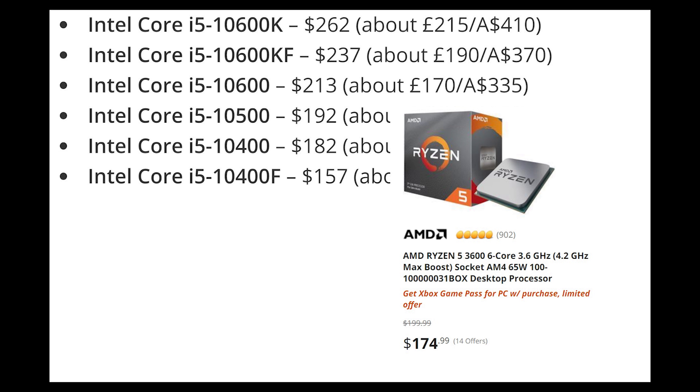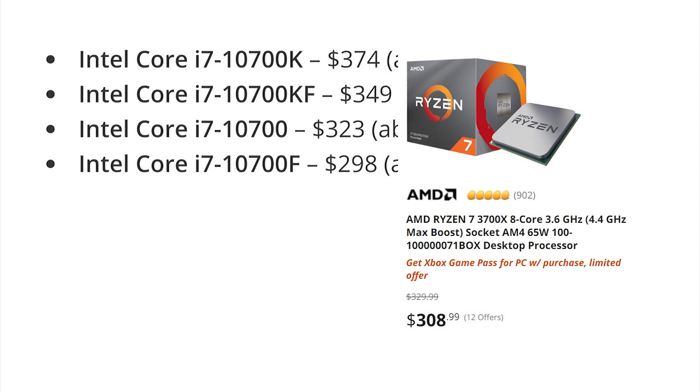The i5 price premium is around $60 to $80 over competing AMD options. For the i7, the 10700 models are priced at $323 and the highest variant at $374, while the comparable US price for Ryzen is around $308 - so almost a $70 price difference. In the Indian market, the price range is a little higher due to taxes and import duties.